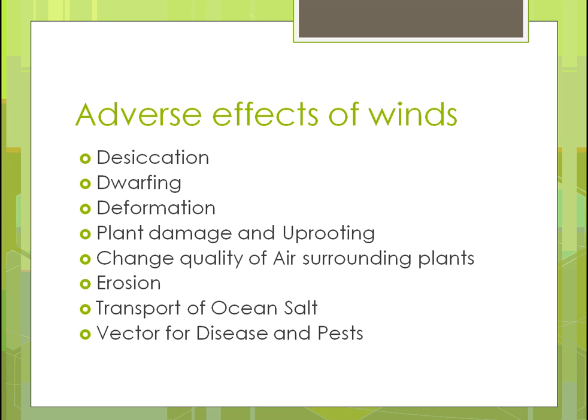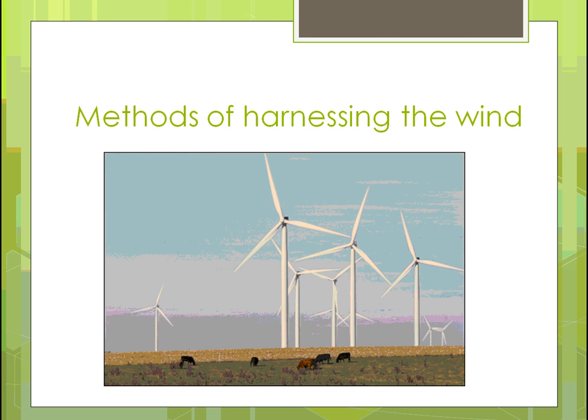Wind can also be a vector for disease and pests. A vector is something that transports it, so the wind is the vector — it gets disease or pests from one plant to another through the wind. There are many other ways vectors can work, but we're talking about wind here.